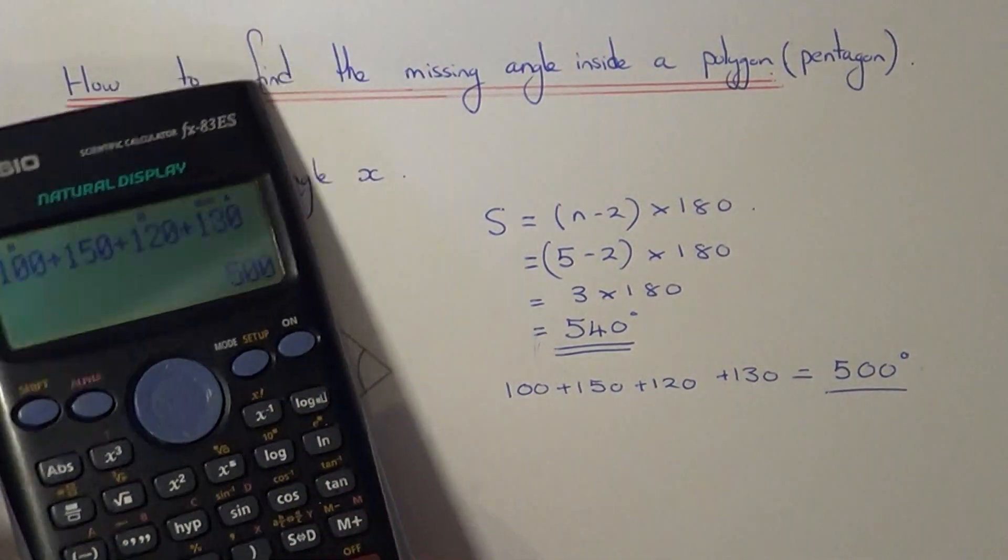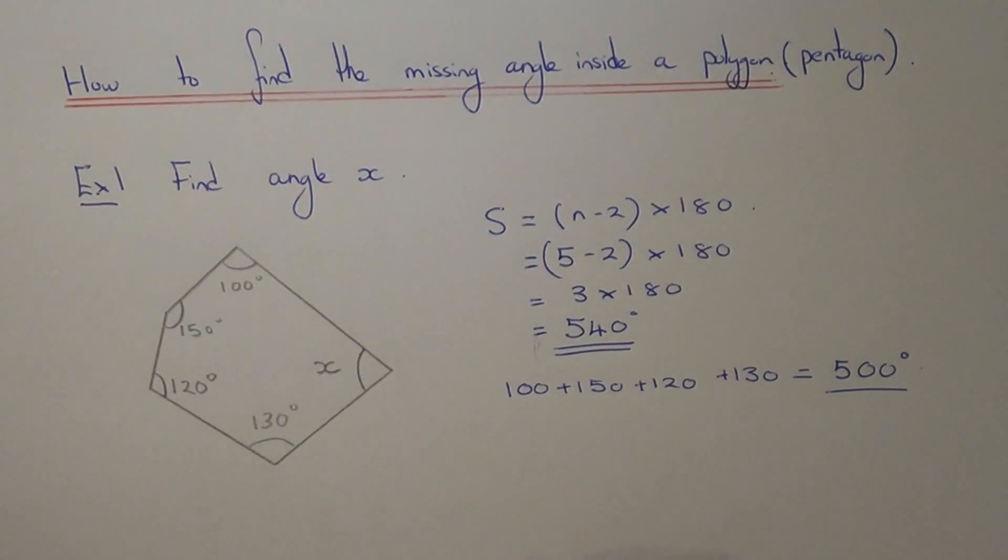So we just need to now subtract this away from 540, and this will give us the size of angle X. And so the angle X is 40 degrees.